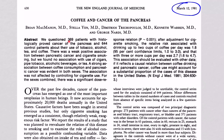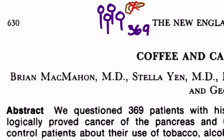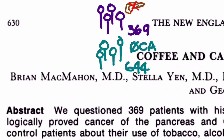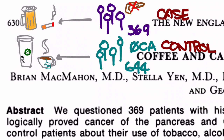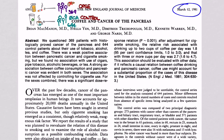Let's start with the abstract. They questioned 369 patients with histologically proven cancer of the pancreas and 644 control patients about the use of tobacco, alcohol, tea, and coffee. I'm a very visual person, so I like to draw out what's going on: 369 patients with pancreatic cancer and 644 who didn't have cancer. They asked both groups about cigarettes, alcohol, coffee, and tea. You may immediately recognize this as a case-control study design — those with pancreatic cancer are the cases and those without are the controls.